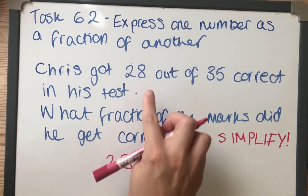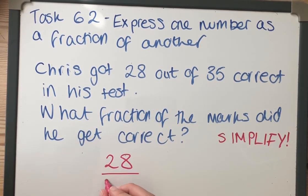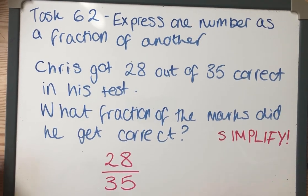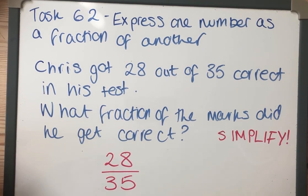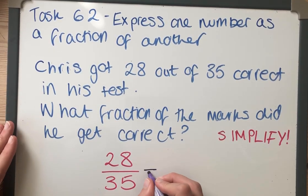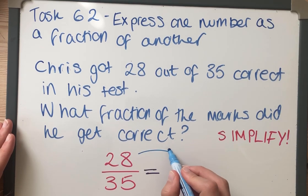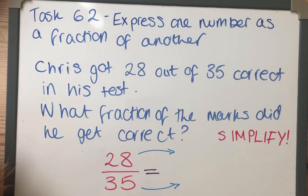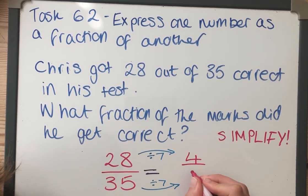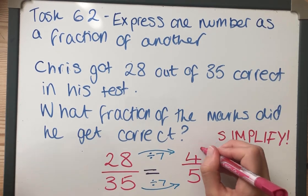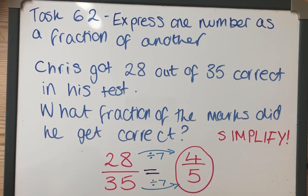So he got 28 marks, 28 correct marks, out of a possible 35 marks. So that is my initial fraction. I am now going to have to simplify that fraction, so I'm going to have to find something I can divide both 28 and 35 by. I've got to think what times table are they both in—well, they are both in the seven times table. So I'm going to divide them both by 7, which will leave me with 4 and 5. So the answer is four-fifths.